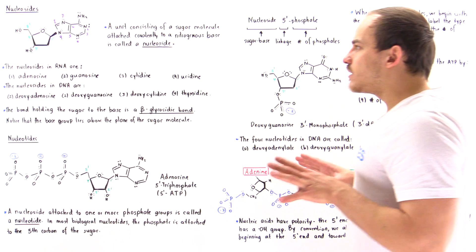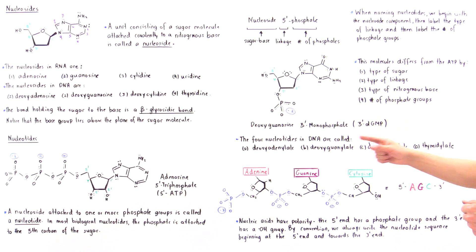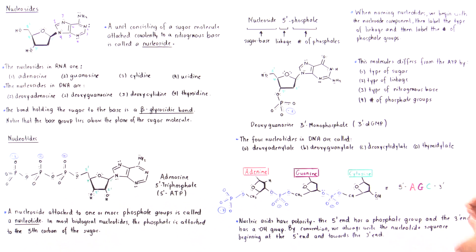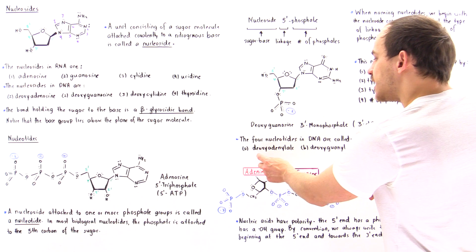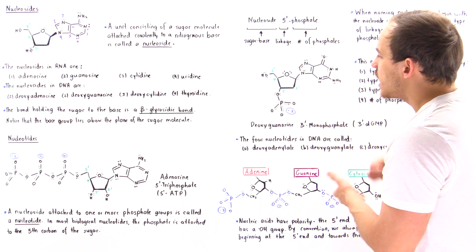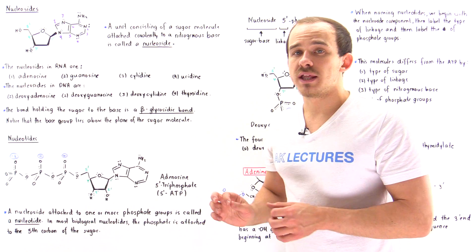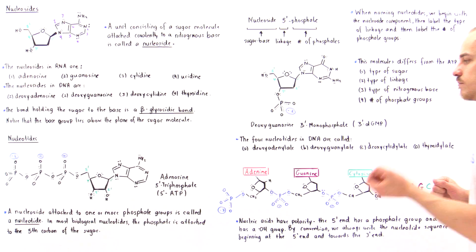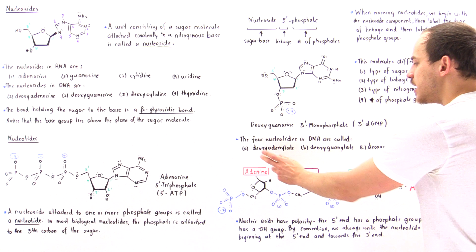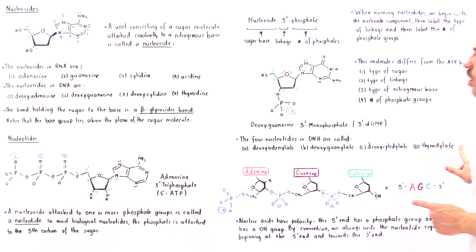In DNA molecules, we have four types of nucleotides: deoxyadenylate, deoxyguanylate, and so forth. Because we have the deoxy prefix, that simply means we don't have that oxygen found on the second carbon. If we want to describe the four different types of nucleotides on RNA molecules, we simply remove the deoxy term. And because we don't have thymine in RNA, that nucleotide will be different in RNA.